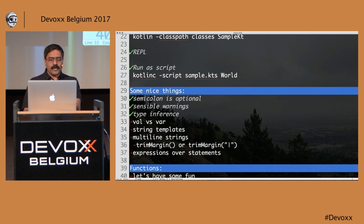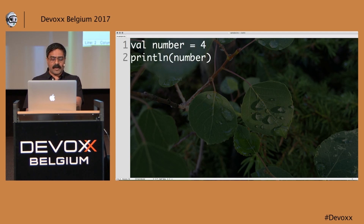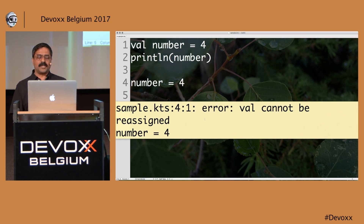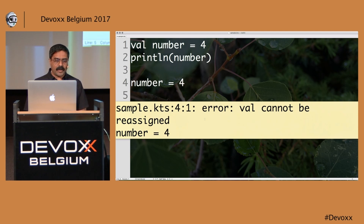Going forward, I used the word 'val' a minute ago. Let's explore that. If I say 'val number = 4' and print the value of number, I can do that readily with type inference. But if I then try to assign number = 4 again, I get a compilation error because 'val' means it's immutable. I cannot assign it on the left-hand side of an assignment — it's an immutable variable.